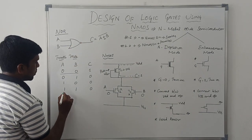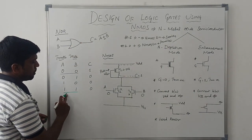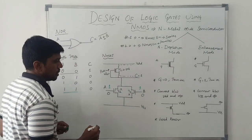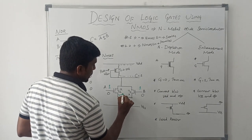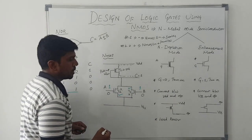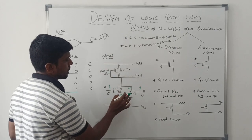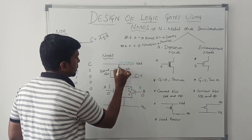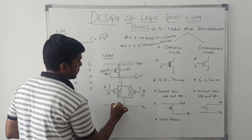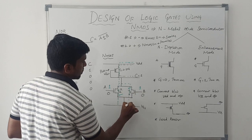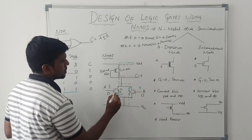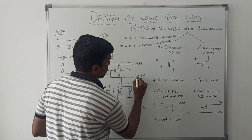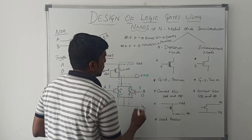Now taking one more input value: A=1, B=1. In this case T2 turns on and T3 transistor turns on — both transistors are on. T1 also turns on. VDD is connected to VSS through T1, T2, and T3 transistors. So the output of this logic circuit is 0, and the truth table output is also 0.